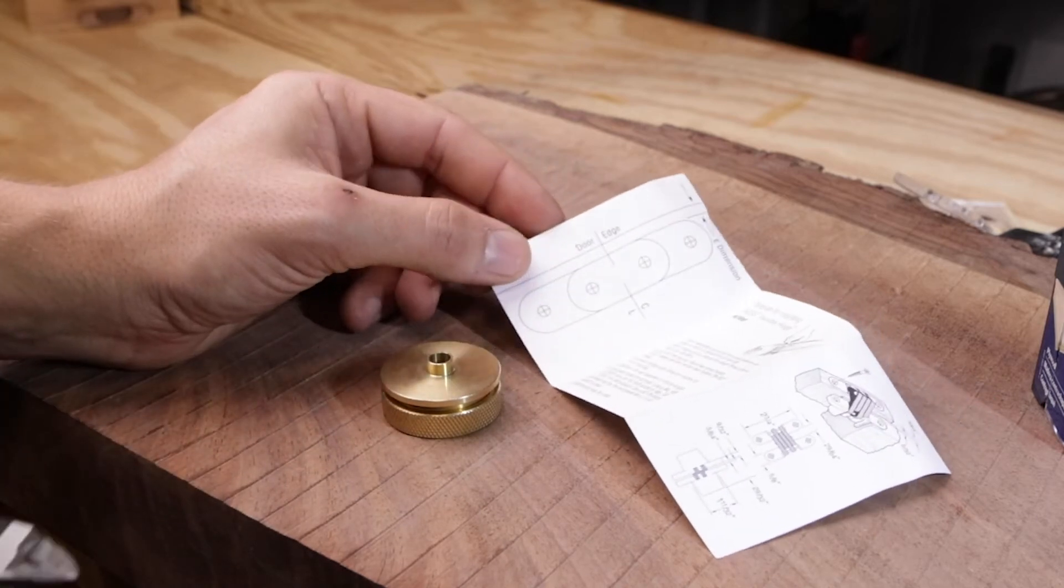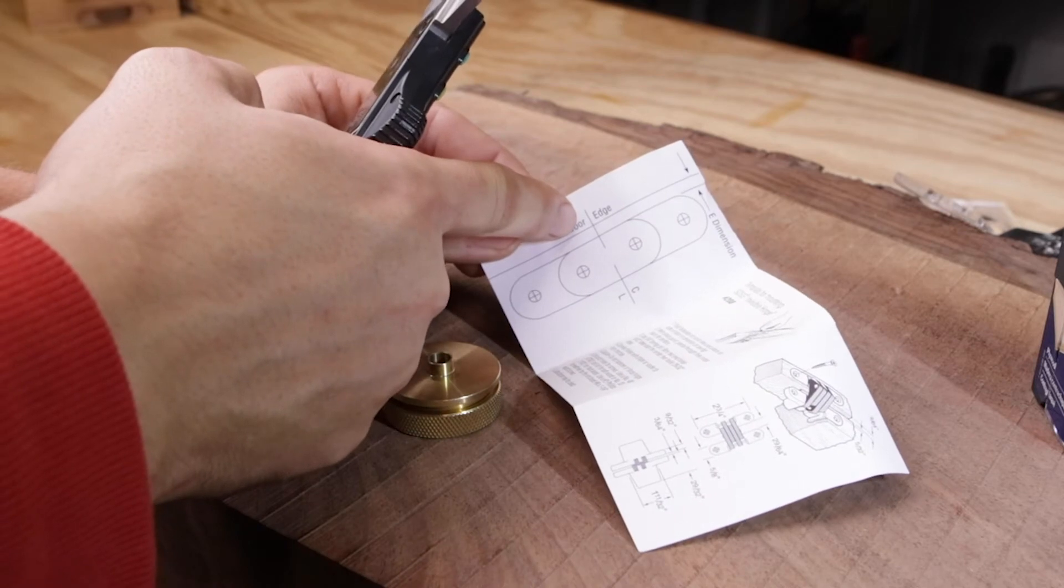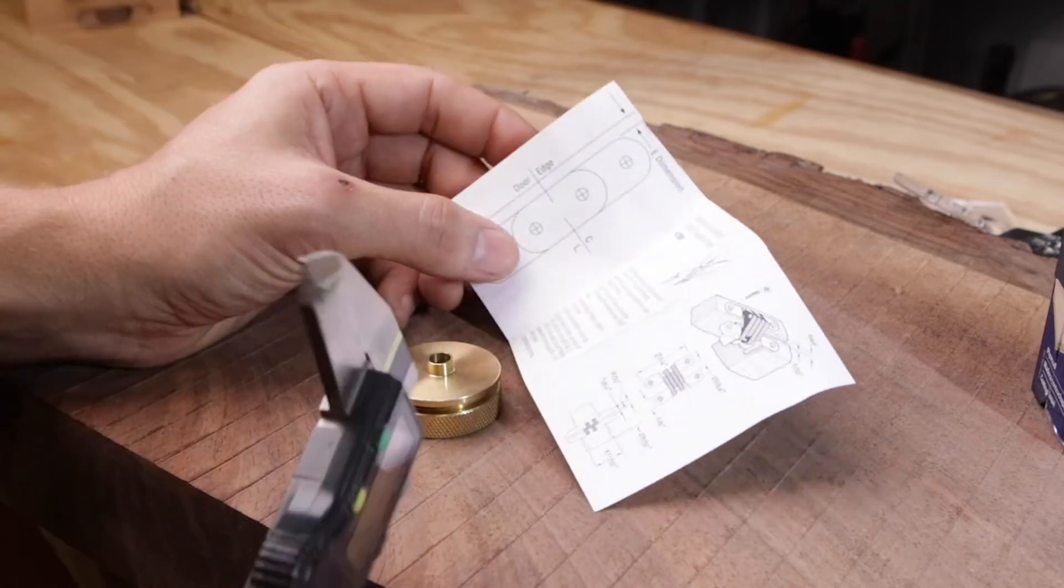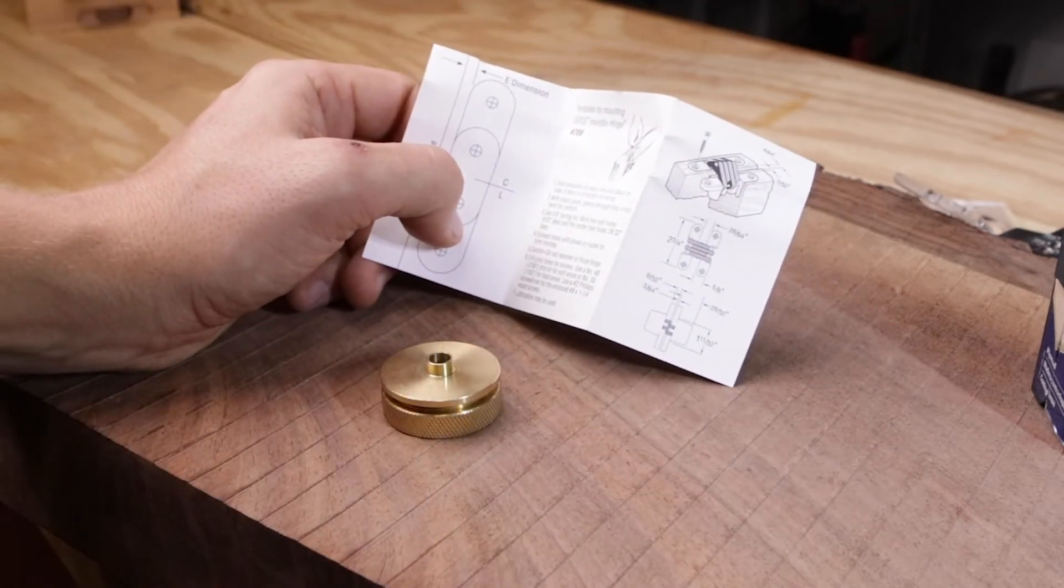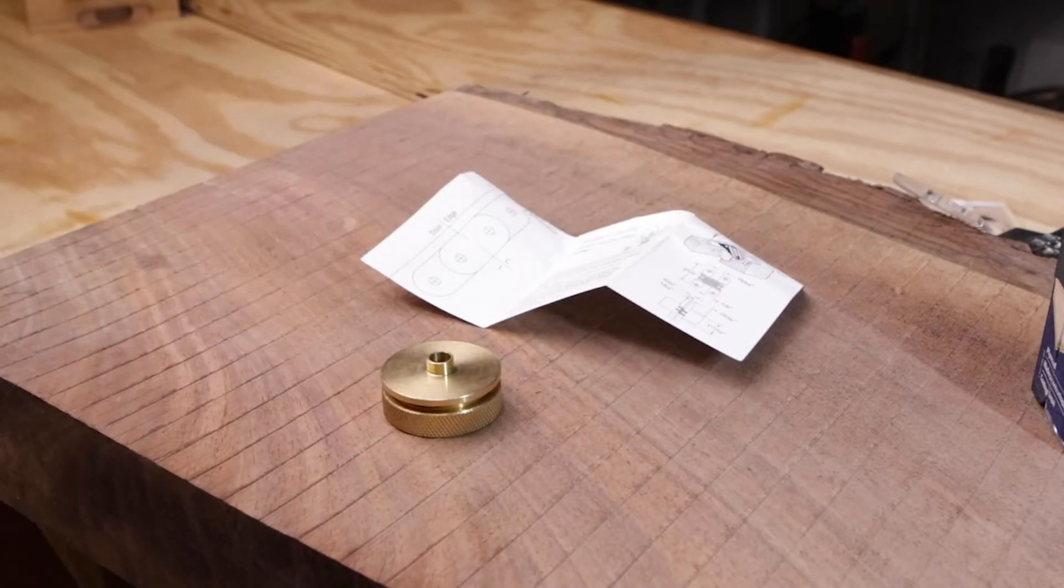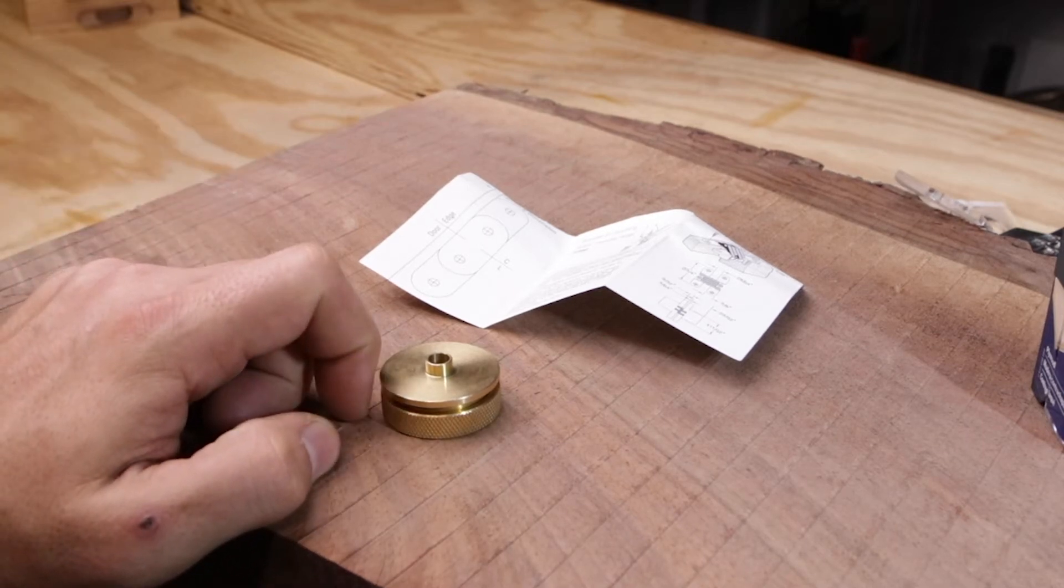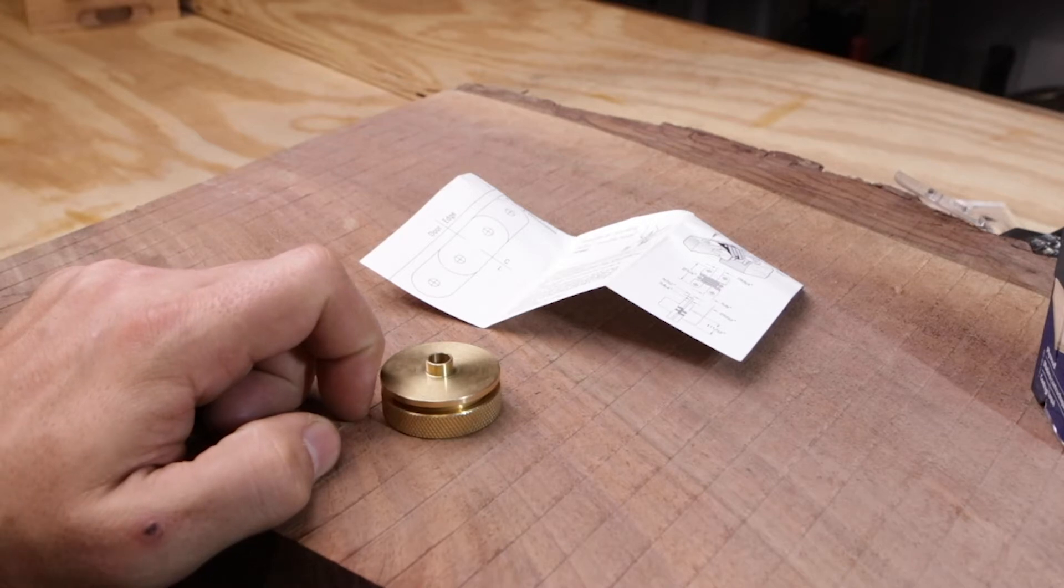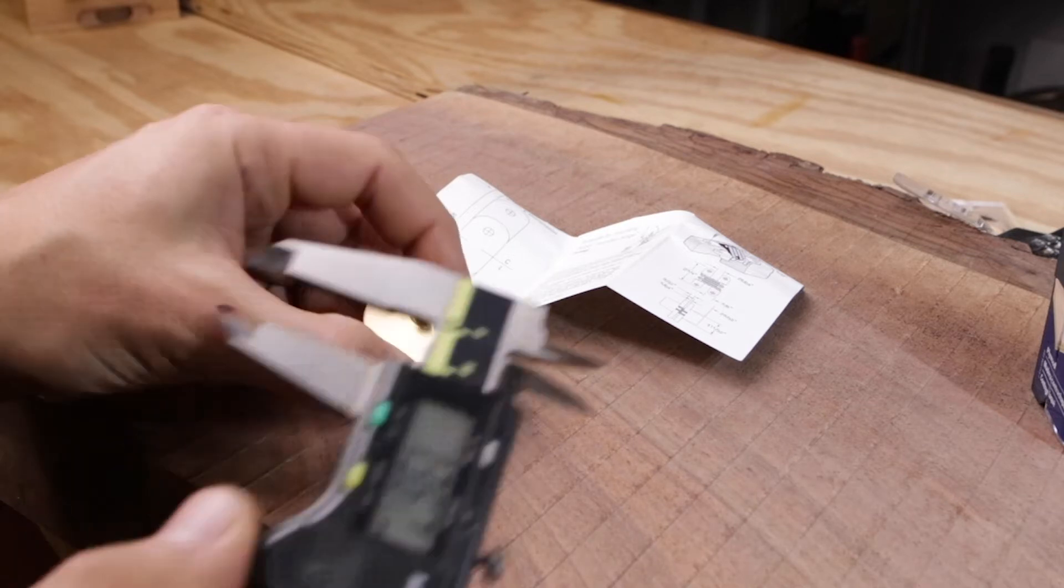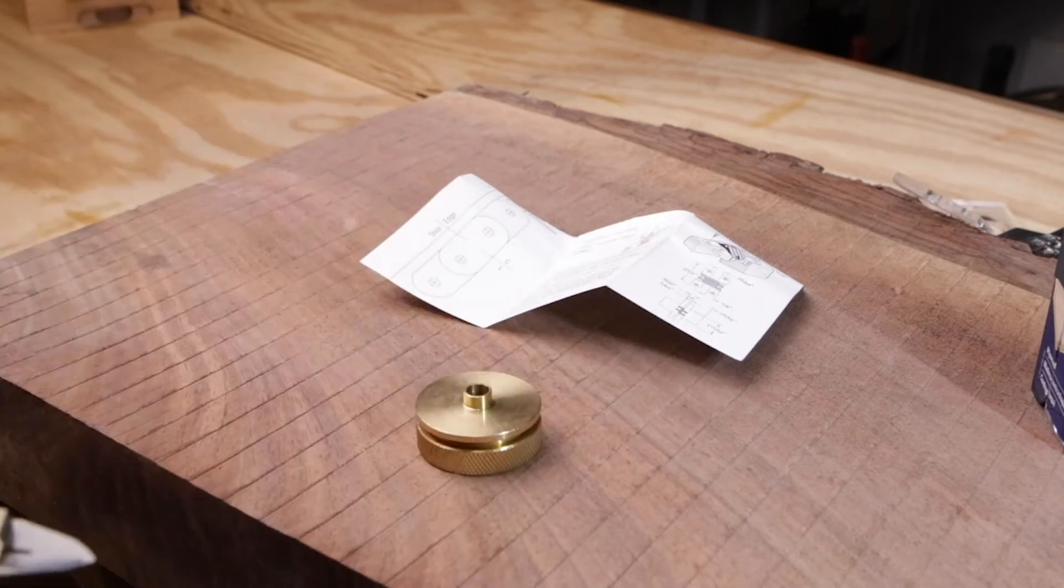The second part that's important is this distance right here, in between the outside and the closest position where the hinge can be. Now, according to this, it is 5/32nds. 5/32nds for metric people is almost 4 millimeters. I think it's 3.967. So for all intents and purposes it's wood. We're going to call that 4 millimeters and we can call this 8 without any problems.